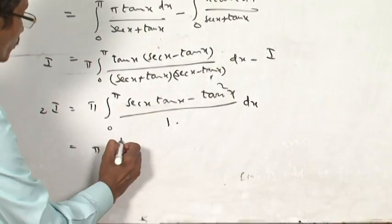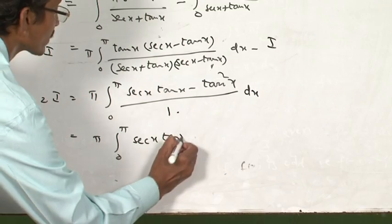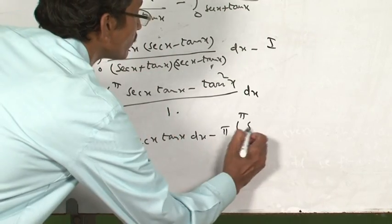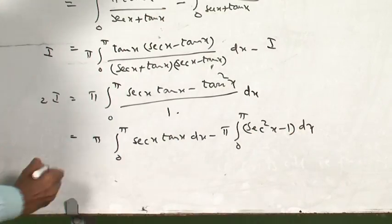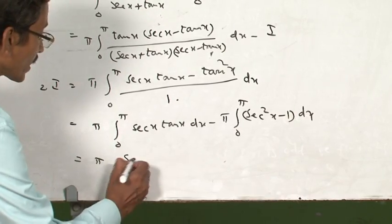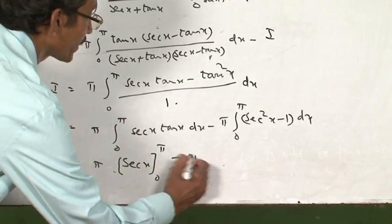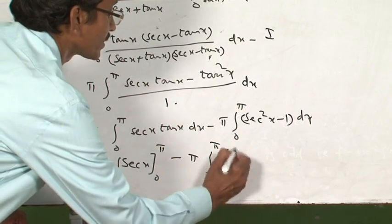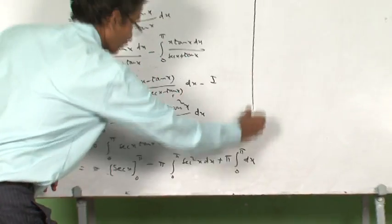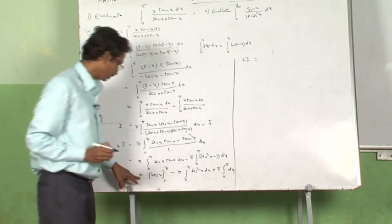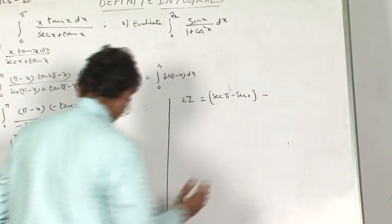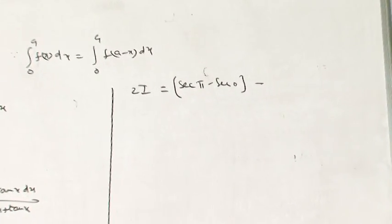So 2I = π·integral from 0 to π of sec x·tan x dx minus π·integral from 0 to π of (sec²x − 1) dx. Since the integral of sec x·tan x is sec x, we write: 2I = π·[sec x] from 0 to π minus π·[tan x] from 0 to π plus π·integral from 0 to π of dx. Applying the limits using the known values of sec x and tan x at 0 and π allows us to complete the solution.